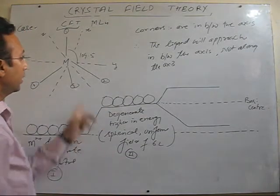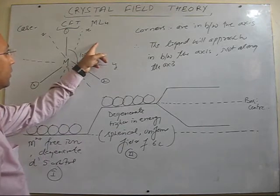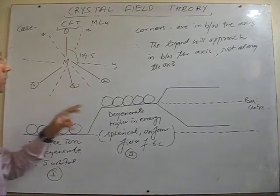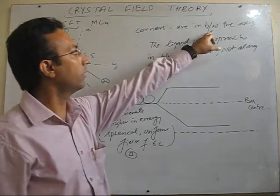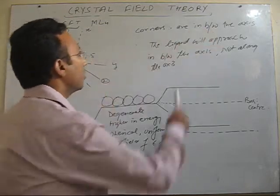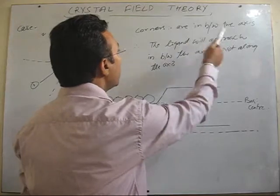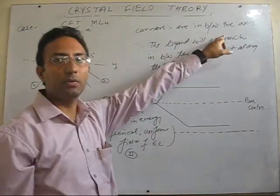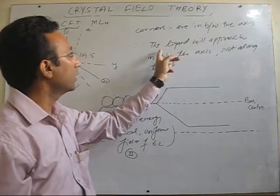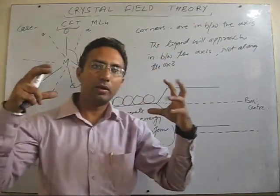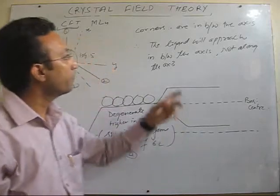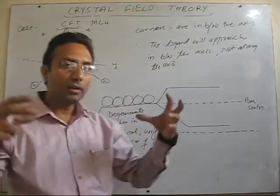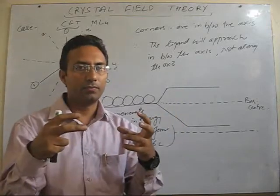Let's continue. As I have told you, in case of tetrahedral structure, all the four corners will not be along the axis, but all the four corners will be in between the axis. Therefore, as the corners will be in between the axis, when the four ligands approach the central metal, they will not approach along the axis — rather they will come in between the axis.